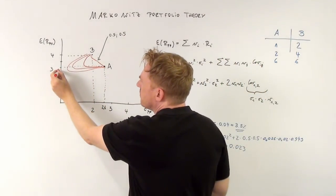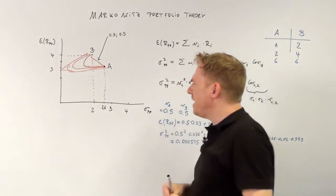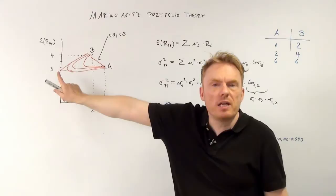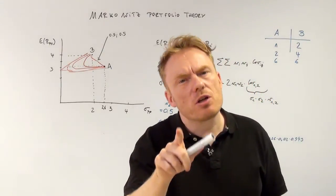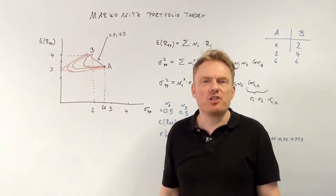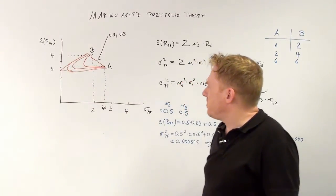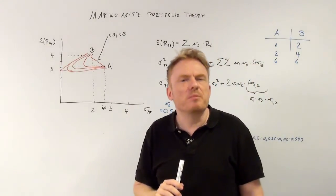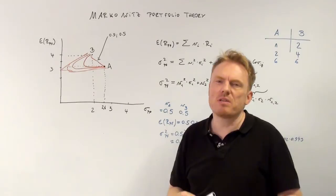If the correlation coefficient is -1, we get a special shape where it is even possible to achieve a standard deviation of exactly 0. If and only if the correlation coefficient equals -1 — meaning the two shares are perfectly negatively correlated — it is possible to completely eliminate portfolio risk, achieving a standard deviation of exactly 0.